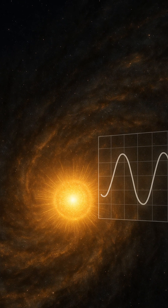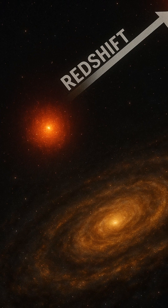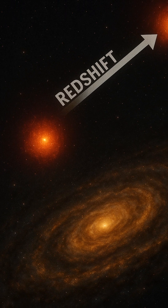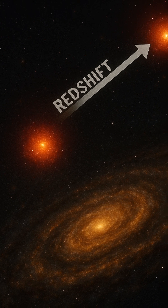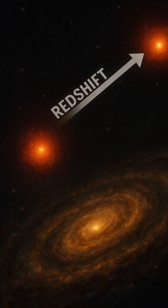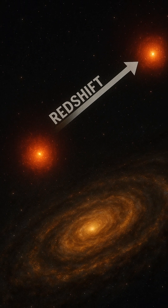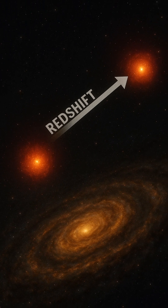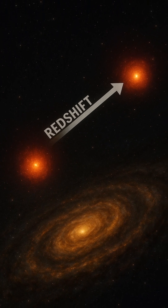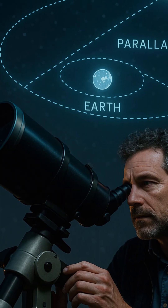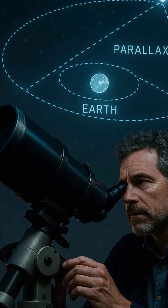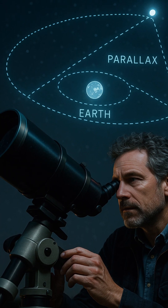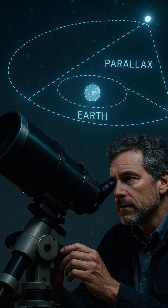It begins with the most direct rung: parallax. This method relies on simple geometry. As Earth orbits the Sun, nearby stars appear to shift positions slightly against the background of more distant stars, much like how your finger seems to move when you close one eye and then the other.